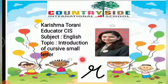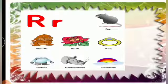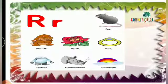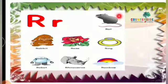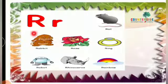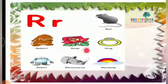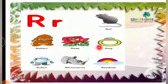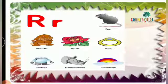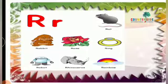Cursive letter R. Let's start with the vocabularies. R makes R sound. R says R. R for rat. R for rabbit. R for rose. R for ring. R for robot.